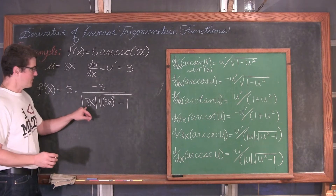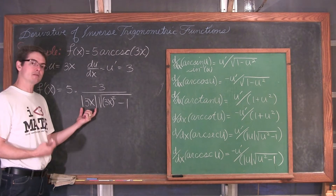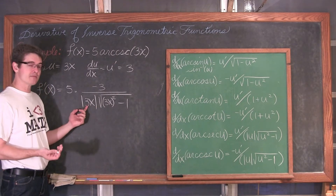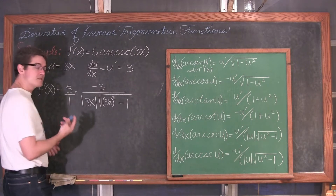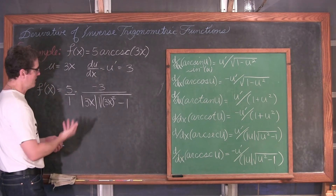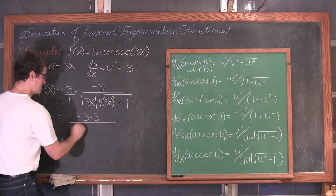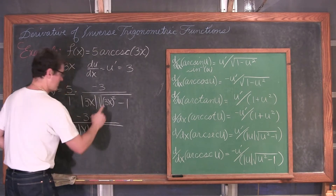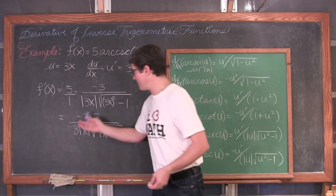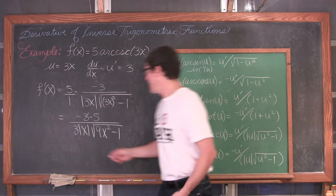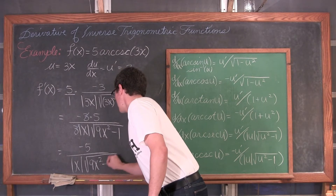A couple of things here. The 3 can be taken out of the absolute value function because it is positive — the absolute value is just making sure x remains positive. I am also going to put the 5 over 1 and multiply across the top. So we have negative 3 times 5 over 3 times the absolute value of x times the square root of 9x squared minus 1. The 3's cancel, giving us a final answer of negative 5 over the absolute value of x times the square root of 9x squared minus 1.